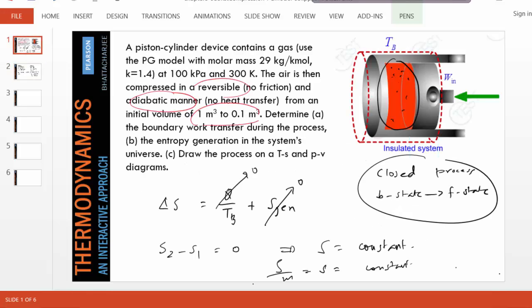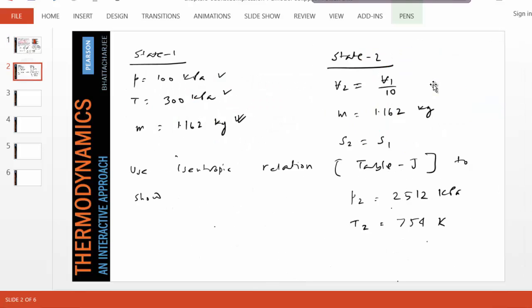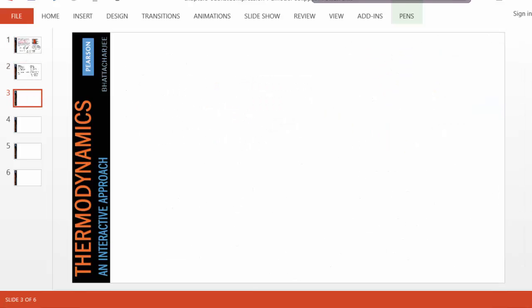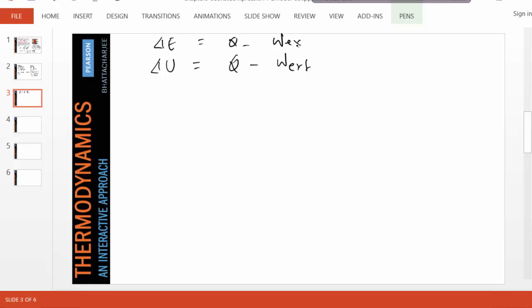So in this particular problem, we are seeking the boundary work transfer WB. So if we write the energy equation for this closed process, delta E equals Q minus W external. And if we neglect KE and PE, obviously, we can do so because the gas doesn't have much PE to begin with, and there's no kinetic energy, the gas is not moving around.